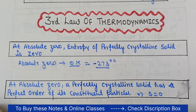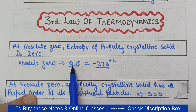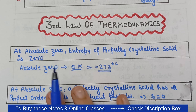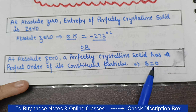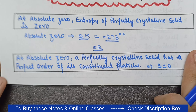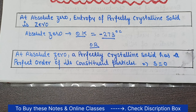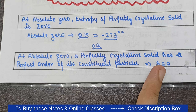This is the third law of thermodynamics. At absolute zero, a perfectly crystalline solid has entropy equal to zero because the randomness and disorder will also be zero. The kinetic energy of the particles will also be zero, and the system will be stable and in perfect order. Another statement we use is: at absolute zero, a perfectly crystalline solid has a perfect order of its constituent particles, which leads to zero entropy. If the constituent particles are in order, the disorder is less, and the entropy will also be zero.